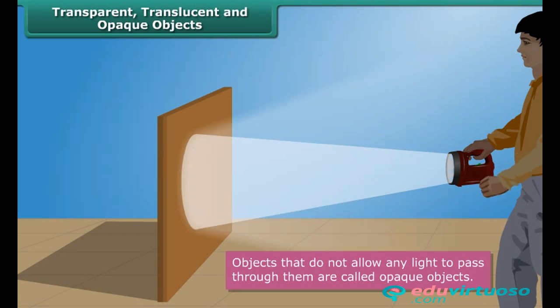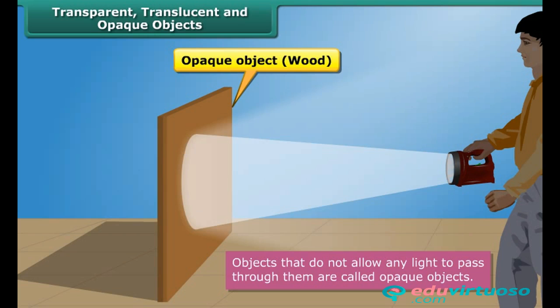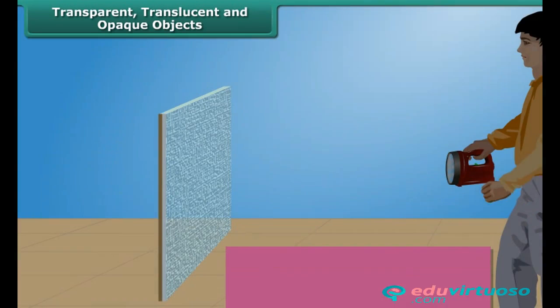Objects that do not allow any light to pass through them are called opaque objects. As a result, we cannot see through them. When light falls on an opaque object, its shadow is formed on the other side of it. Wood, sheets of metal, dark-colored plastics, and rocks are examples of opaque objects.